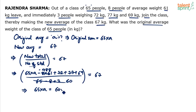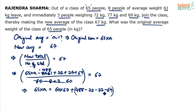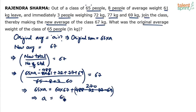So 65A equals 60 times 67, with 488 moving to the other side as plus 488, minus 72, minus 77, minus 69. Simplifying: 72 plus 77 is 149, and 149 plus 69 is 218. Then 488 minus 218 is 270. So 65A equals 60 times 67 plus 270.